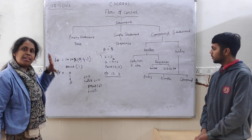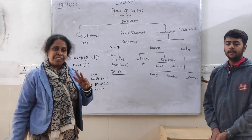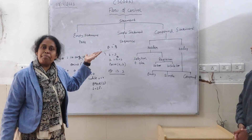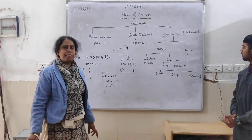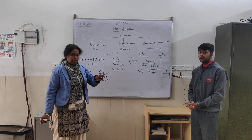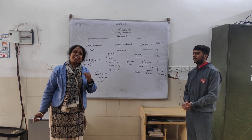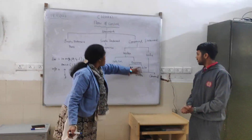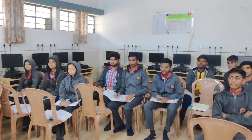Both are the same. So in flow of control, how many statements are there? Three. What are they? Empty statement — example is pass. Simple statement — example is sequence. And compound statement has two parts: header and body. Header has two types: selection and repetition. How many types of repetition? Two types — for loop and while loop. Body has three types: empty, simple, and compound.